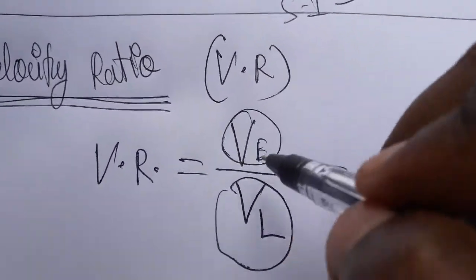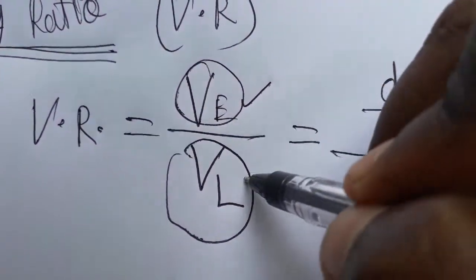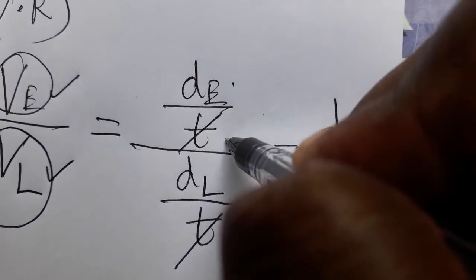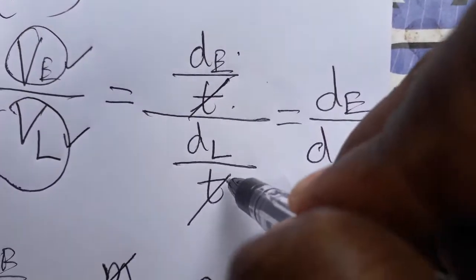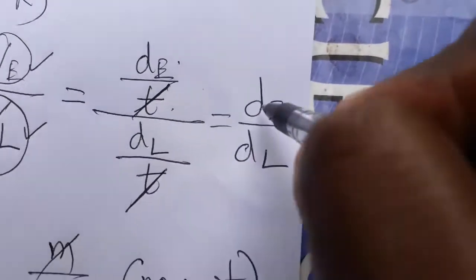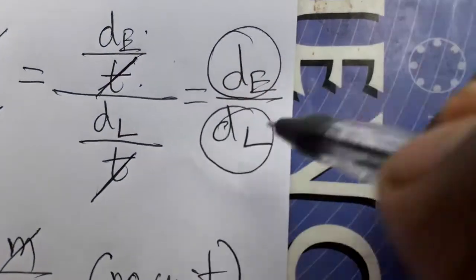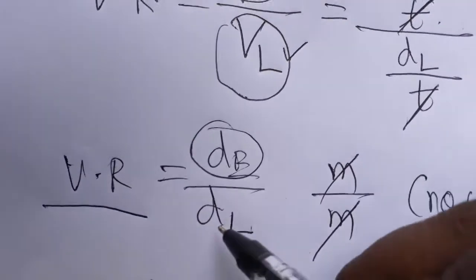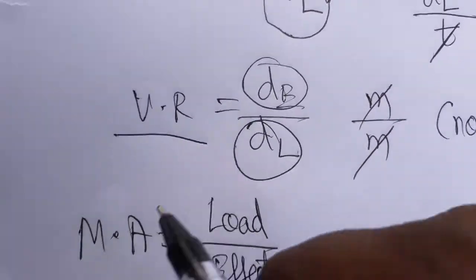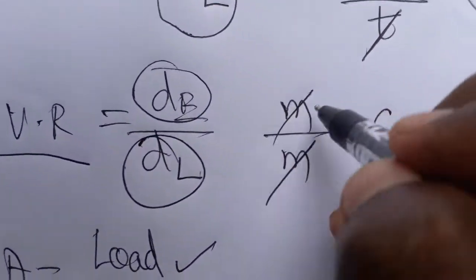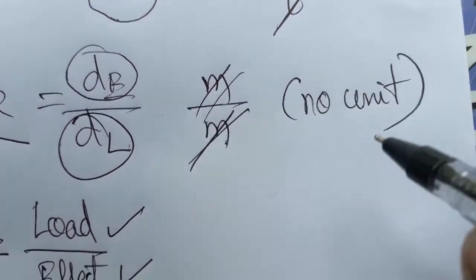Velocity ratio is the ratio of velocity of the effort arm by velocity of the load arm. Velocity is displacement by time, so time gets cancelled. Therefore, velocity ratio is displacement of effort by displacement of load. The unit is metre by metre — metres get cancelled, so there is no unit for velocity ratio either.